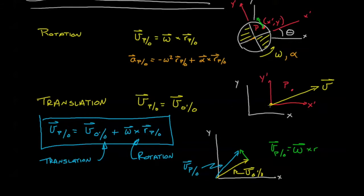Next, let's take a look at translation. We can pretend that we have our primed coordinate frame and it's not rotating in any capacity. Rather, it's accelerating away from the fixed coordinate frame with some acceleration. We know then that the acceleration for that coordinate frame and for every point on it is going to be exactly the same — the acceleration of the point with respect to o is simply the acceleration of the coordinate frame with respect to o.